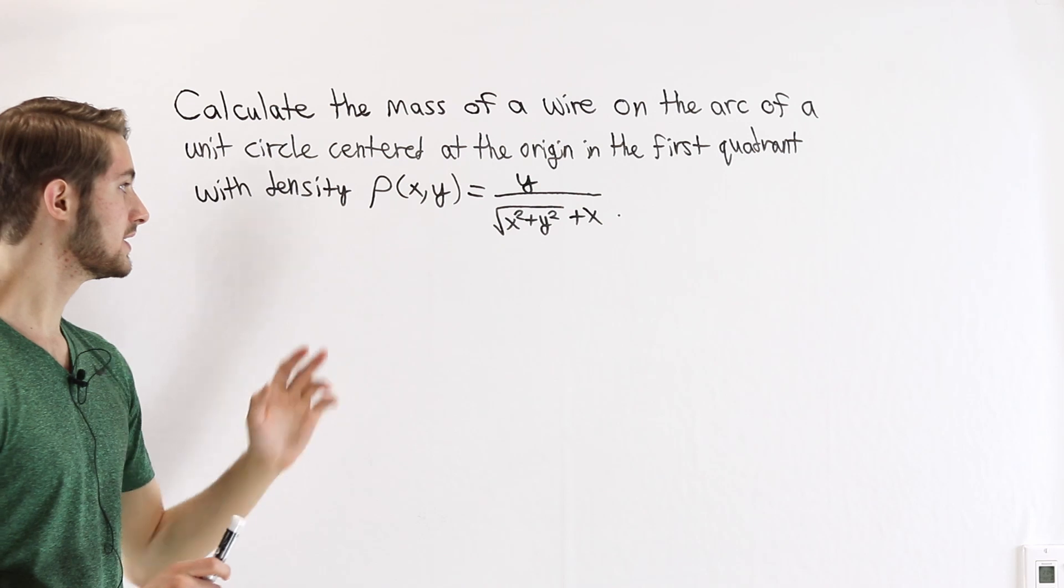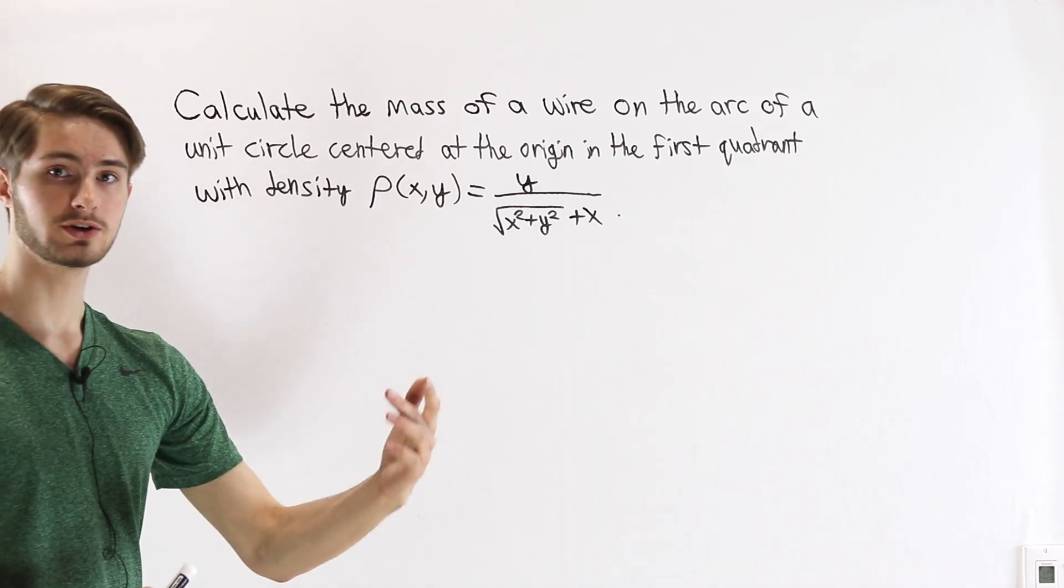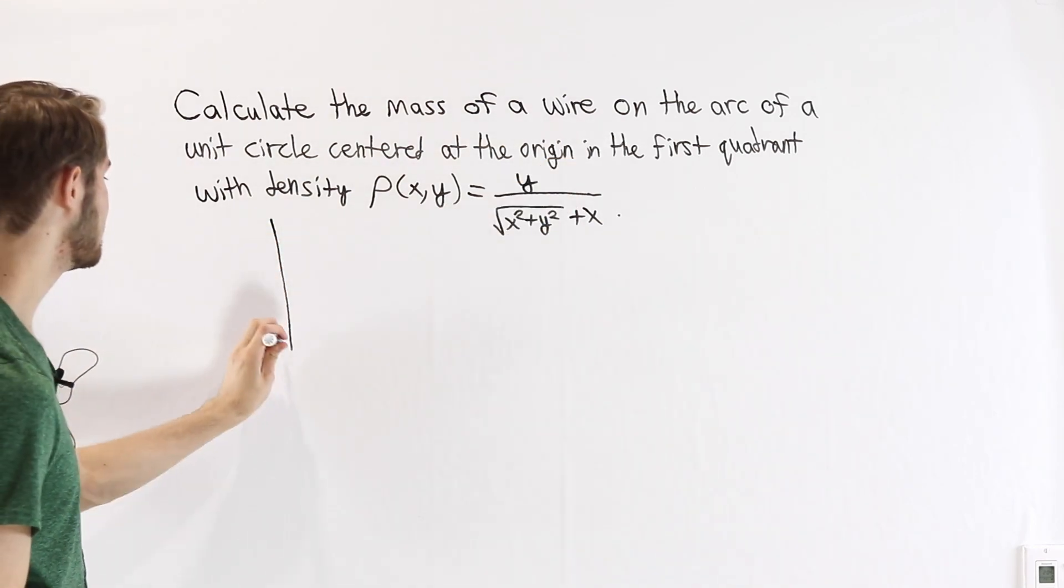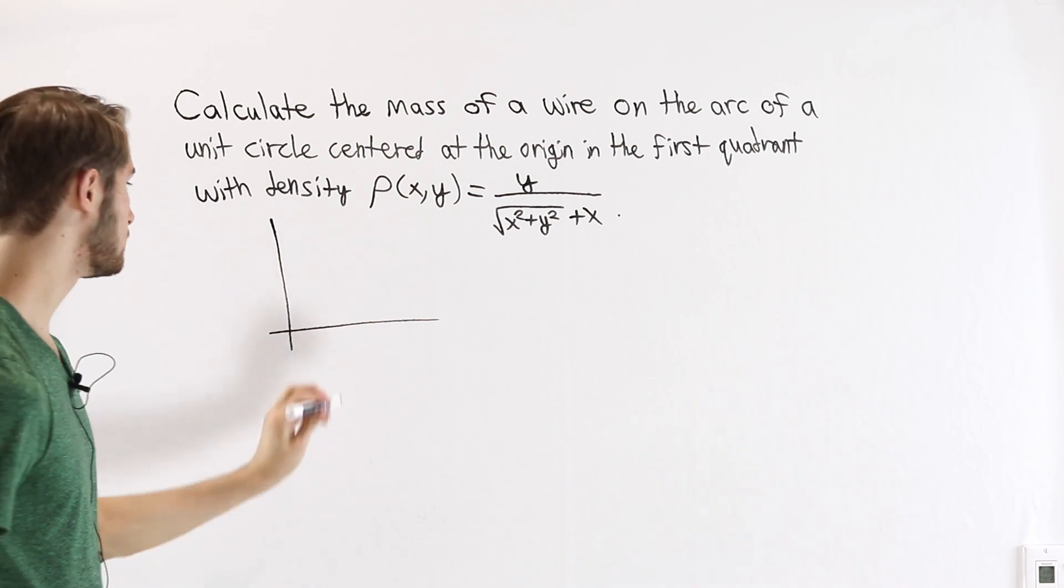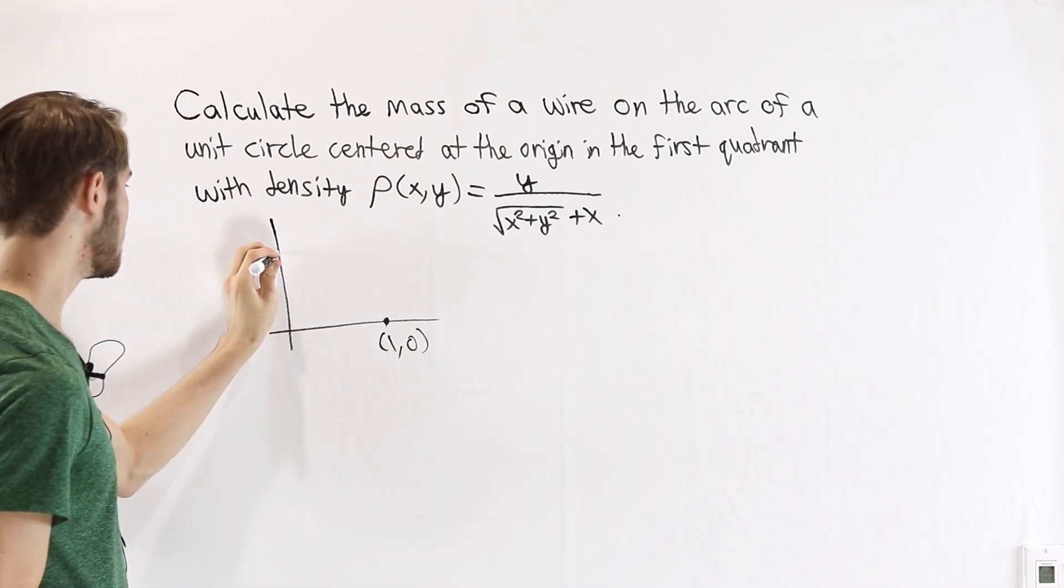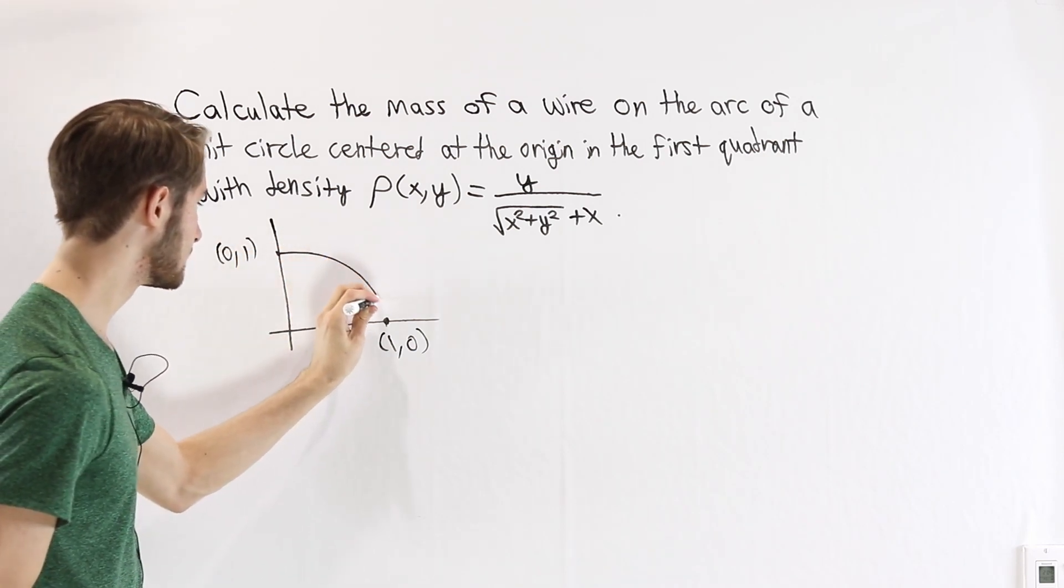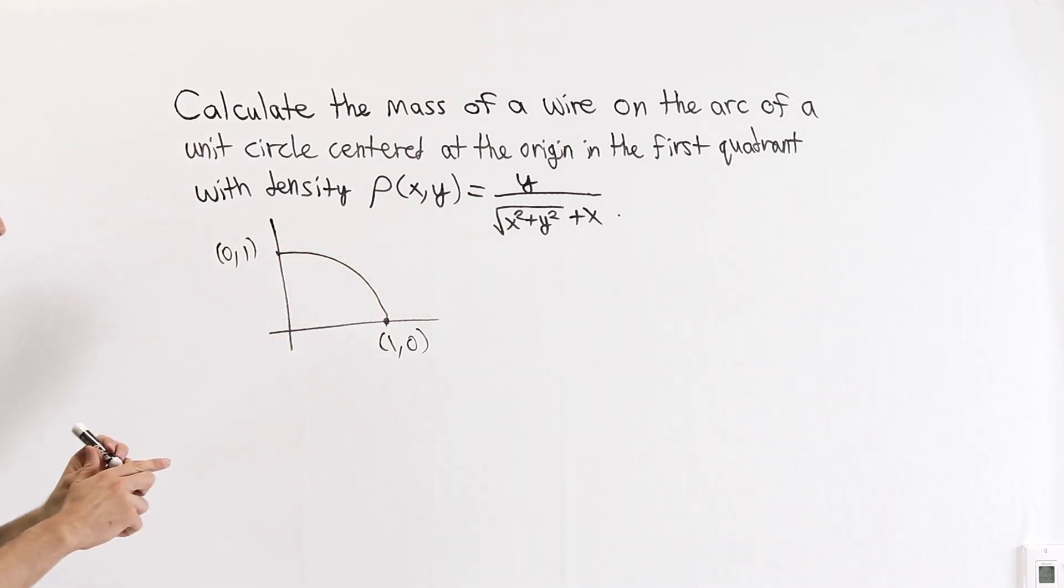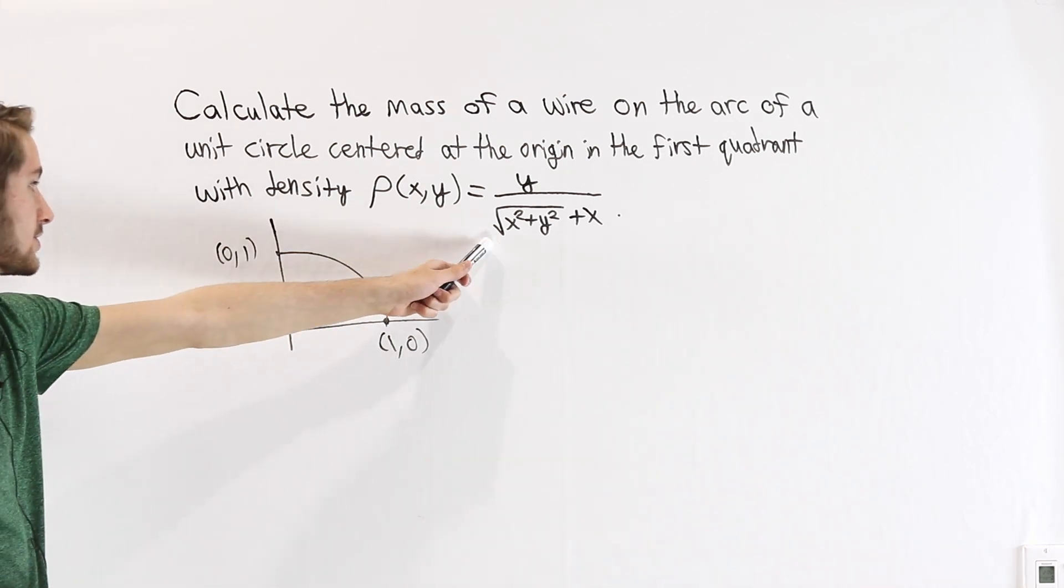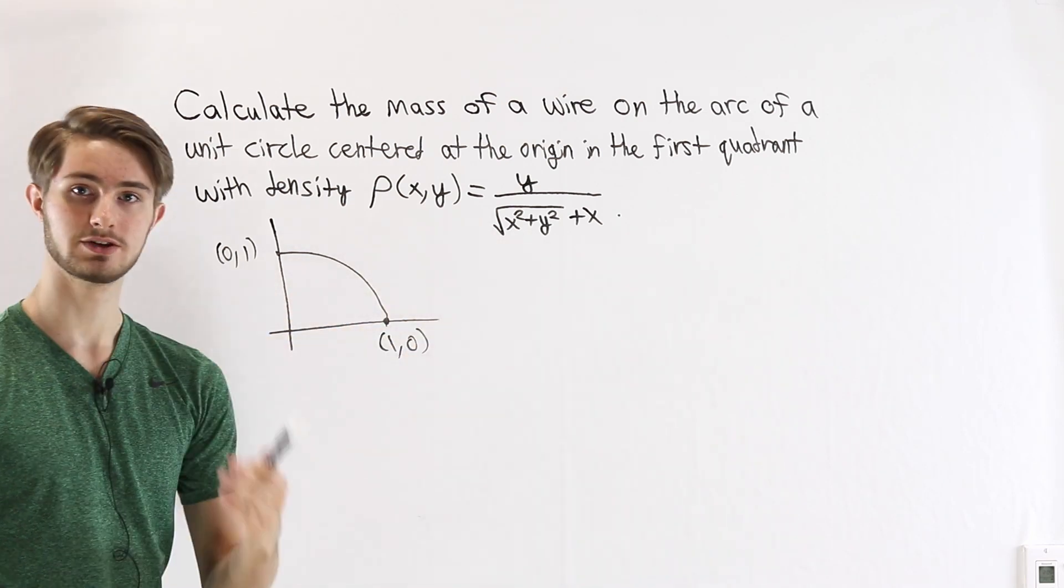And the first step, whenever we do these kinds of calculations, is to figure out what line we're looking at in the first place. It says we're looking at the arc of a unit circle centered at the origin in the first quadrant. So we're going from this point (1, 0) up to this point (0, 1) on the unit circle following the arc of a circle. So this is the curve of our wire, and we have a density function that maps every point along this wire to a particular density value.